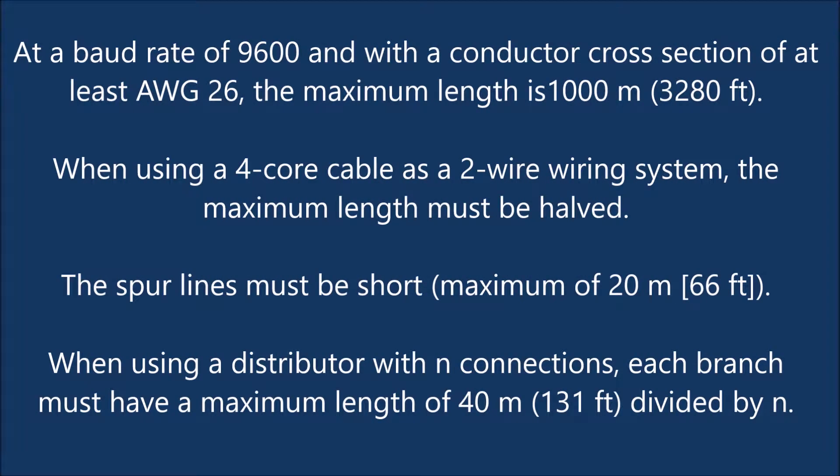At a baud rate of 9,600 and with a conductor cross-section of at least AWG-26, the maximum length is 1,000 meters (3,280 feet). When using a 4-core cable as a 2-wire wiring system, the maximum length must be halved. Spur lines must be short — a maximum of 20 meters (66 feet). When using a distributor with N connections, each branch must have a maximum length of 40 meters (131 feet) divided by N.